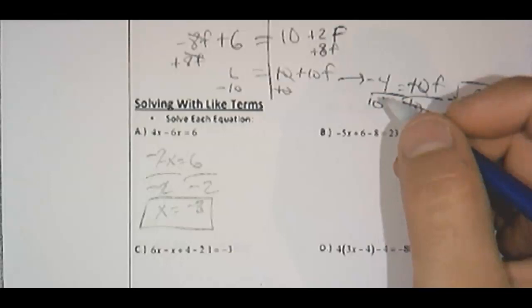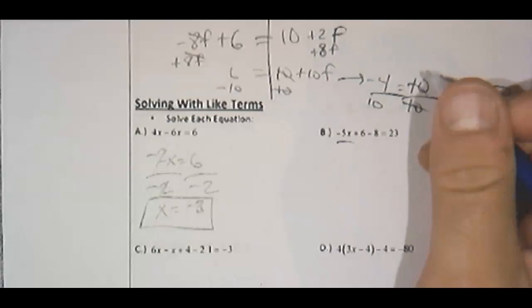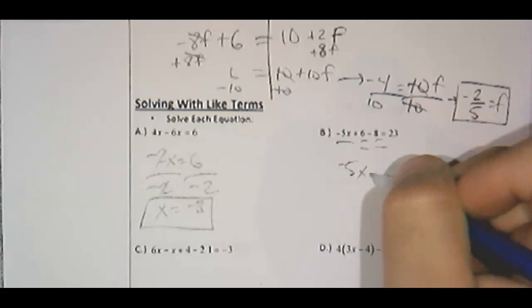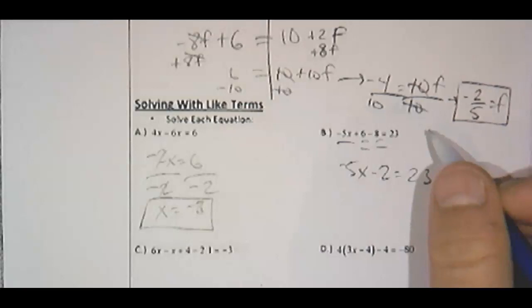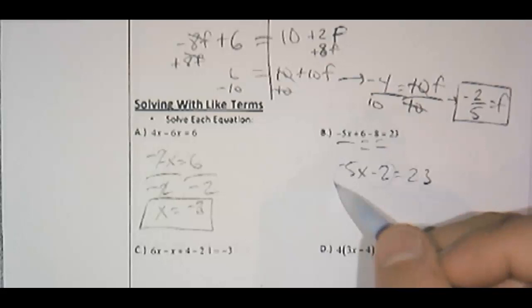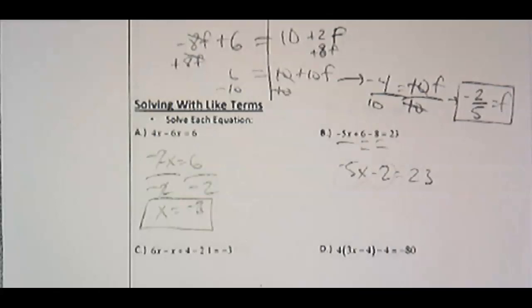Over here on this one, I have some more combining like terms. Remember, this section is solving with like terms. So negative 5x plus 6 minus 8. The plus 6 and the minus 8 are like terms. So negative 5x plus 6 minus 8 is negative 2. So let's put a minus 2. And now it's a two-step equation. Remember, normally in your two-step equations, you're going to undo the adding before you undo the multiplying or dividing. Same thing as here.